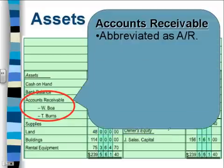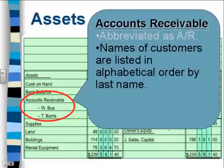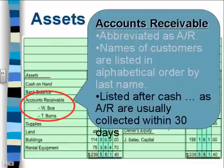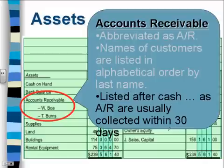AR could be a short form for accounts receivable, but never abbreviate on a financial statement. The names of customers are listed in alphabetical order by last name. Accounts receivable is listed after cash because accounts receivables are usually collected within 30 days. Since assets are listed in order of liquidity, cash comes first, and then accounts receivable as our next most liquid asset.